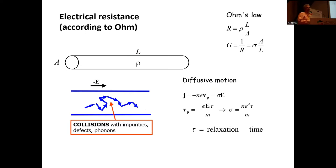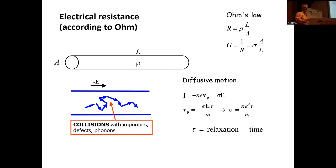An important thing to understand first is that this is not related to Ohm's law. When you think about current passing through a wire, you learn it's related to resistivity. But this has nothing to do with the problem at hand, because Ohm's law applies to macroscopic situations where electrons are moving and colliding with impurities and phonons. In the case of just a molecule, the mean free path — the length the electron travels between collisions — is much longer than the size of the molecule. So this is a completely different situation.